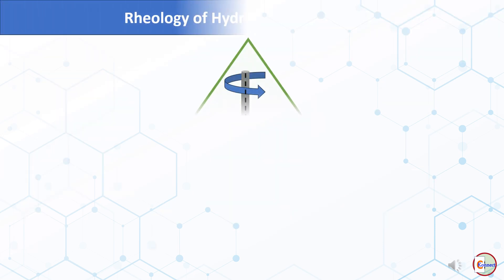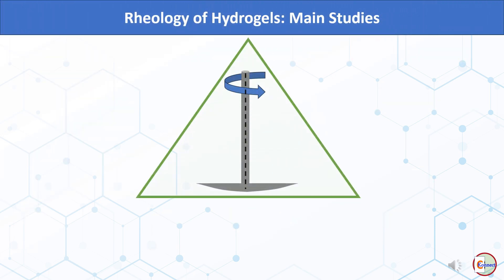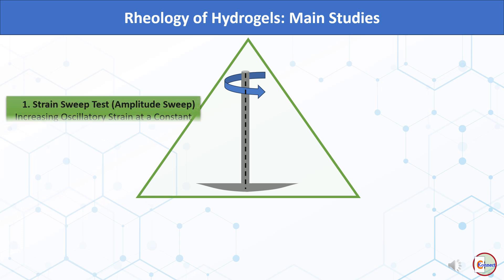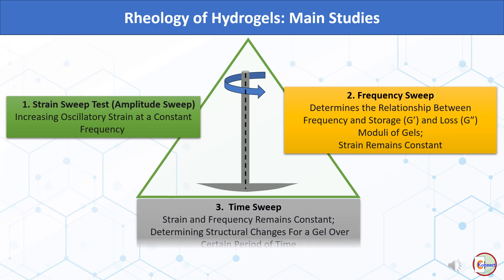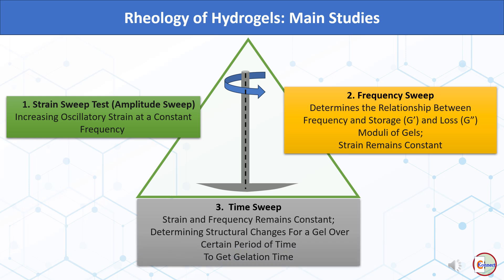Mainly three types of rheology studies are performed on a hydrogel. The first is the strain sweep test or amplitude sweep, performed by increasing oscillatory strain at a constant frequency. The second is the frequency sweep test, which determines the relation between frequency and storage and loss moduli at a constant strain. The third is the time sweep experiment, where strain and frequency remain constant. The time sweep experiment indicates structural changes over time and helps determine gelation time precisely.